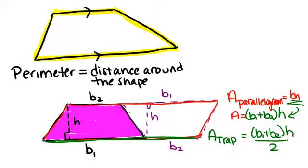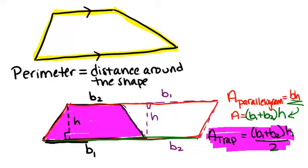And the reason we have b₁ and b₂ in our formula for the area of a trapezoid is that for the parallelogram, the base is all the way across, which is b₁ plus b₂.